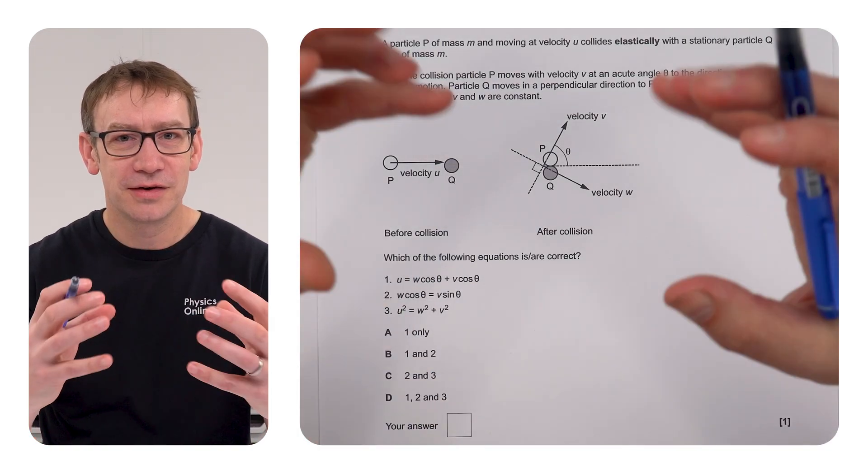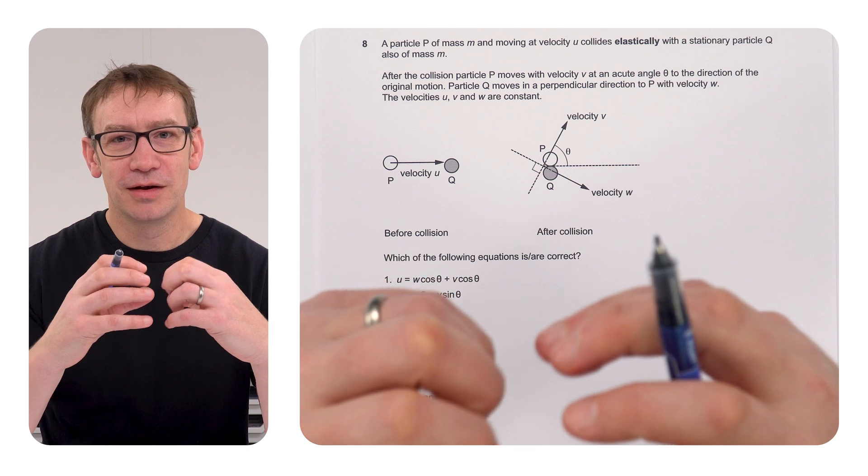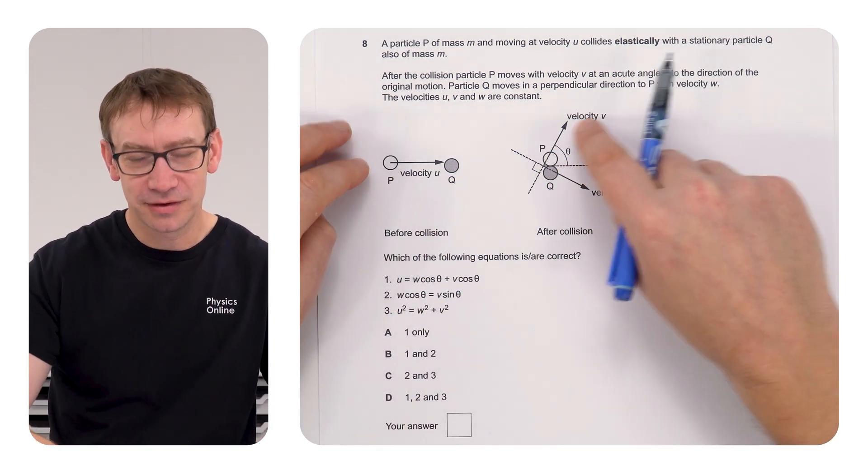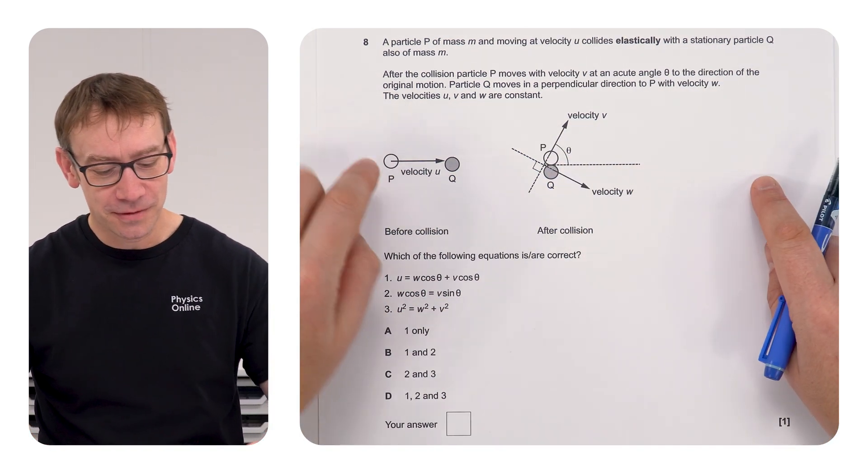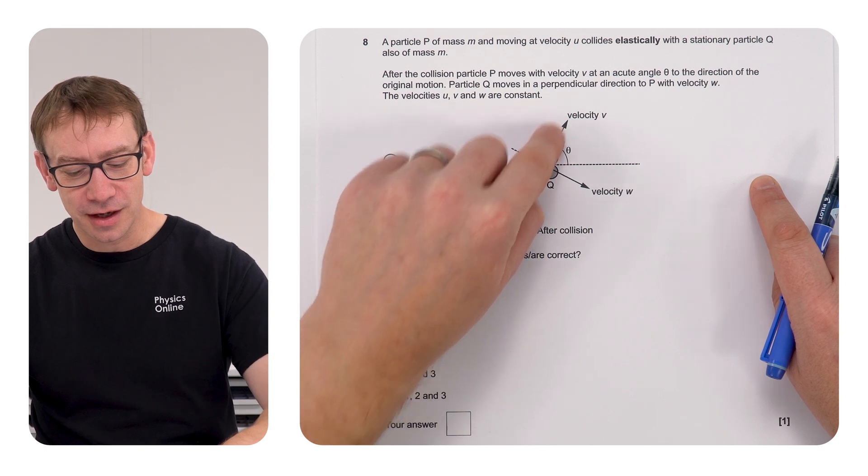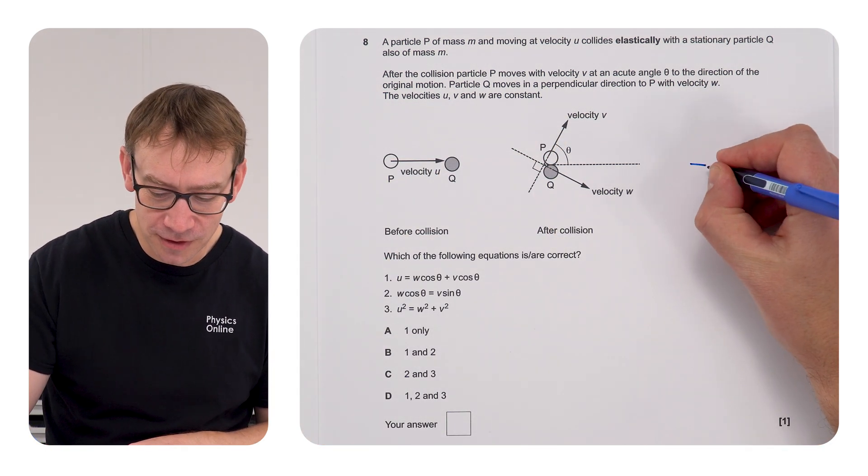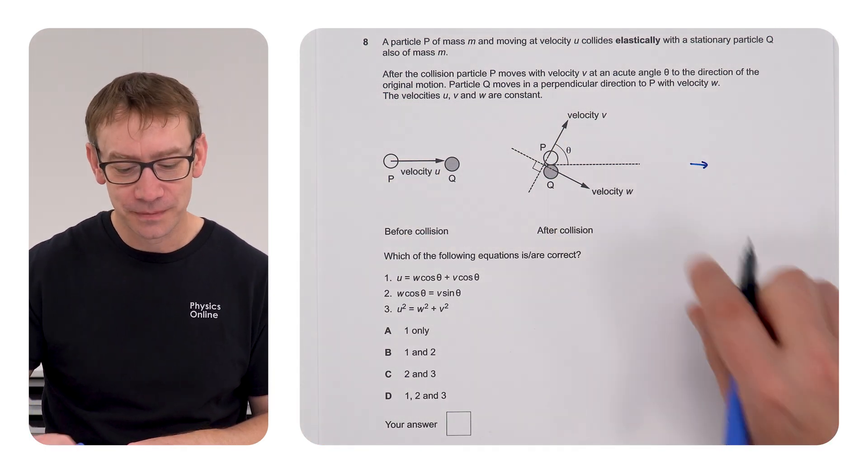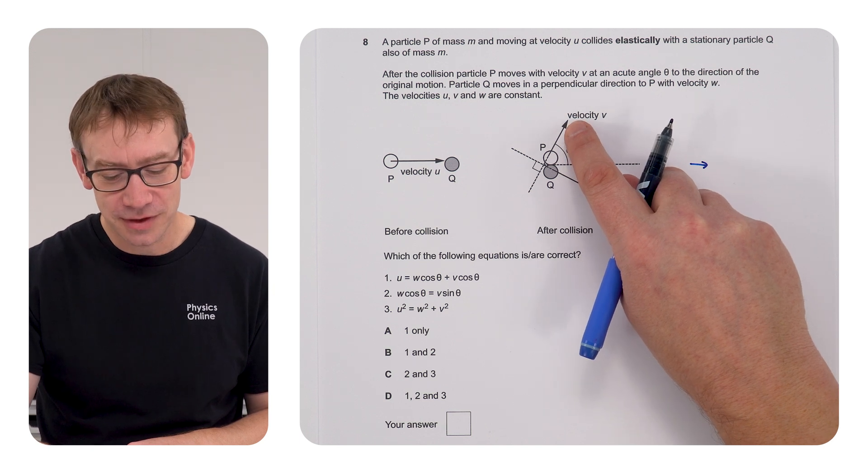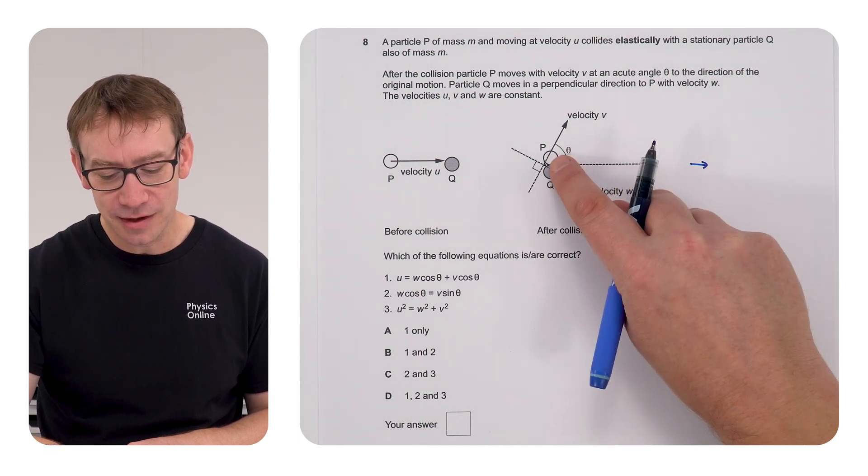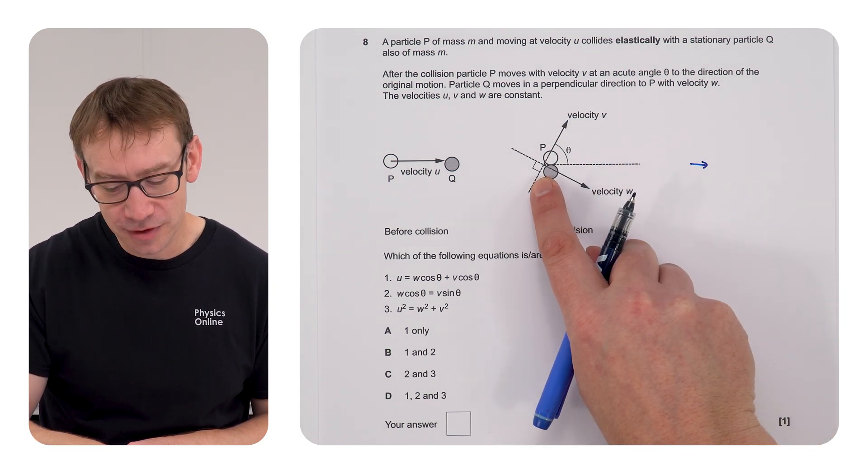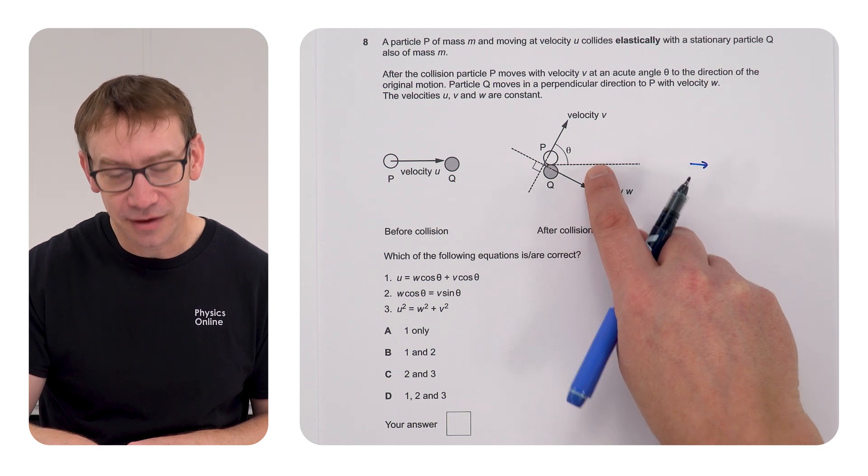So, we've got the collision of two things. We're going to be looking at the conservation of linear momentum, but this case in two dimensions. Now, of course, when P collides with Q, they both go off. And if we think about the conservation of momentum in this direction, there's going to be a component of velocity of P in this direction, and there's going to be a component of velocity W in that same direction as well.